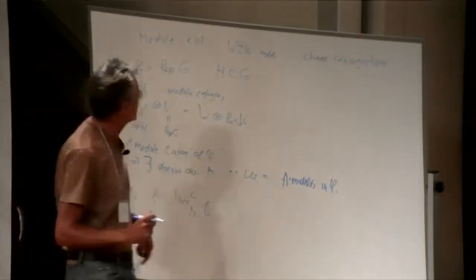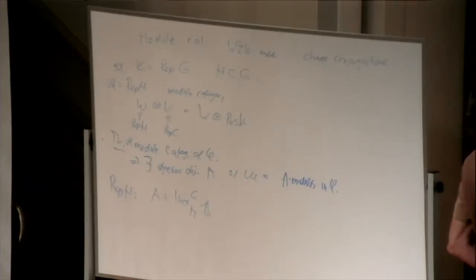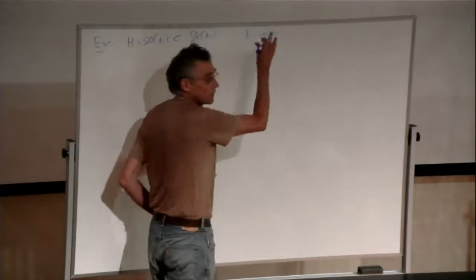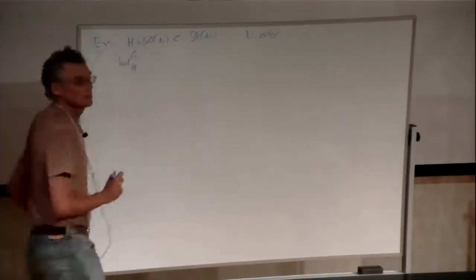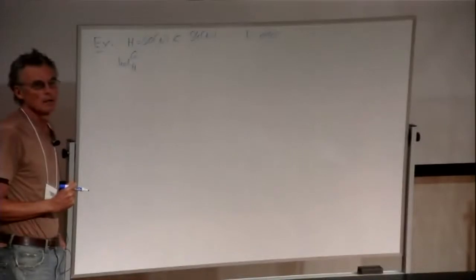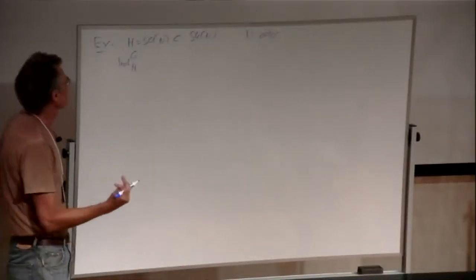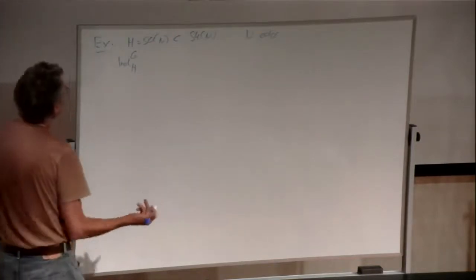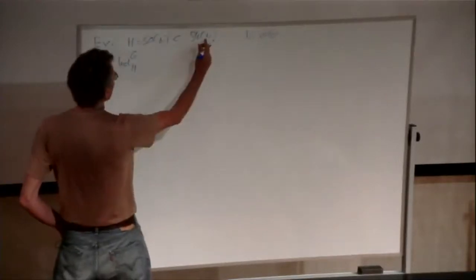For our example, for instance, if for rep H, then A would be the induction from H to G of the trivial representation. Then let's do some explicit examples. If you take SO(N) embedded in SU(N), and let's say N is odd because that's the simpler case.